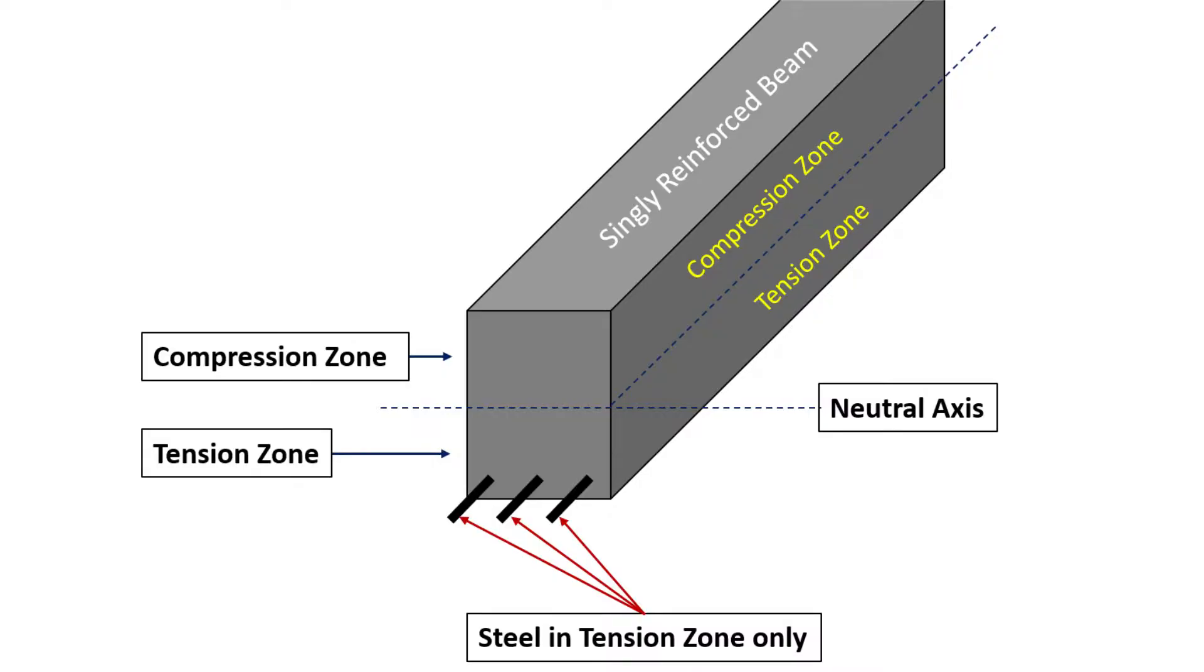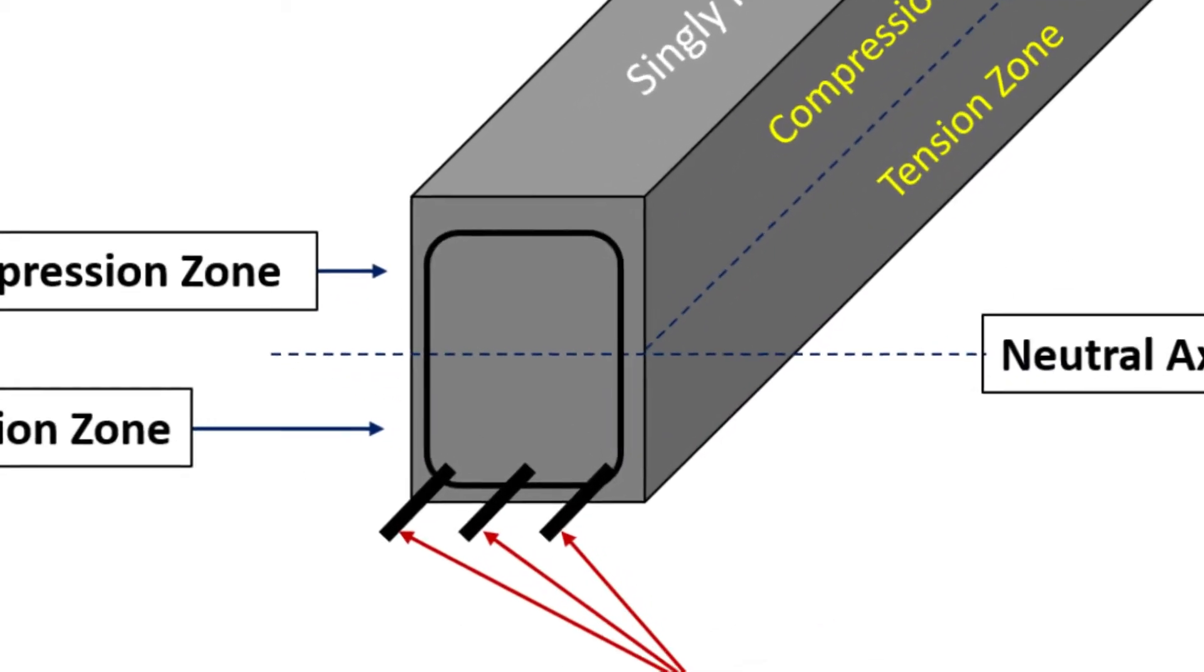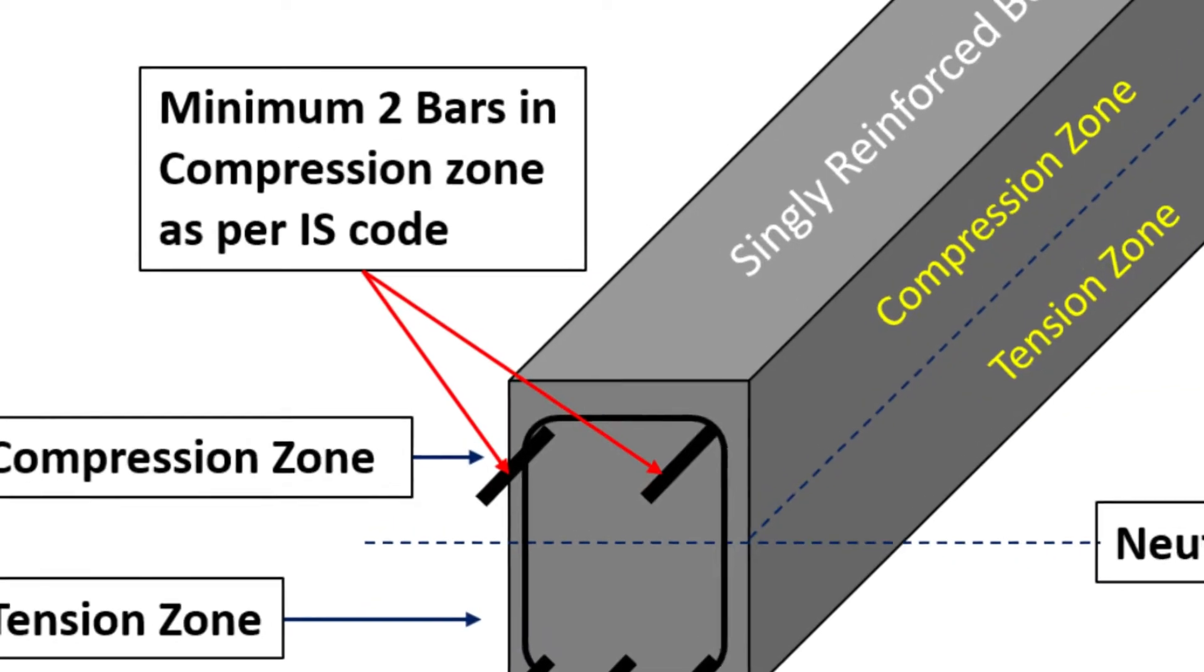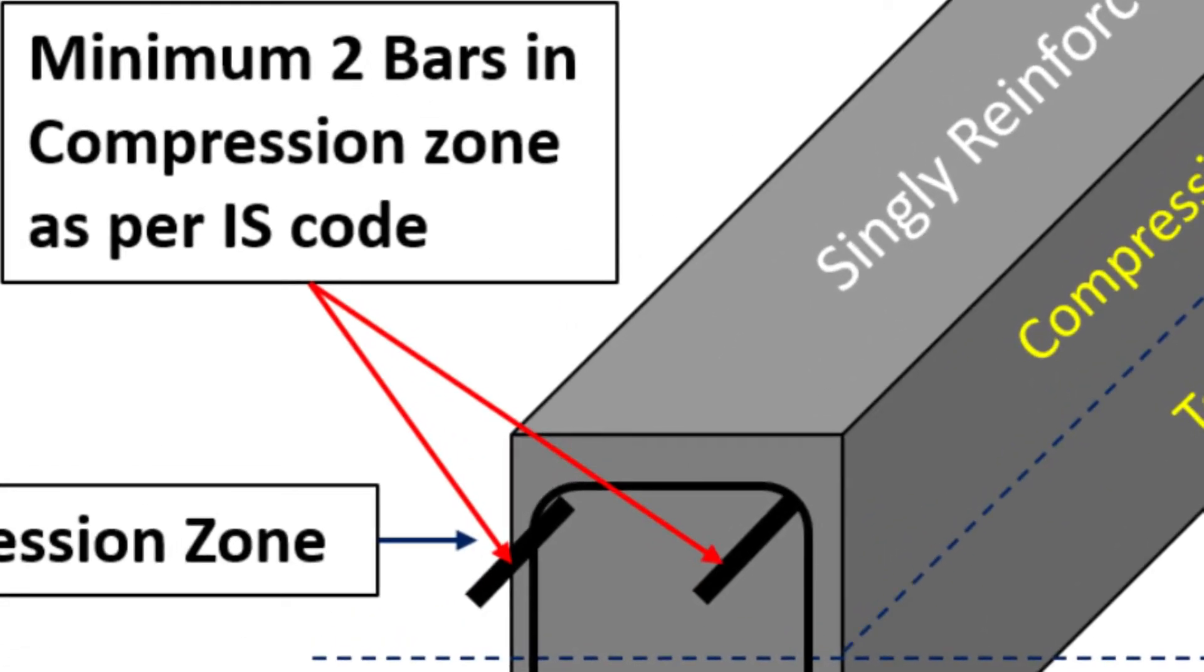However, it is not feasible to only have reinforcement in the tension zone as we need to hold the stirrups in position. As a result, the IS code suggests us to provide at least two reinforcement bars in the compression zone to hold the stirrups in position.